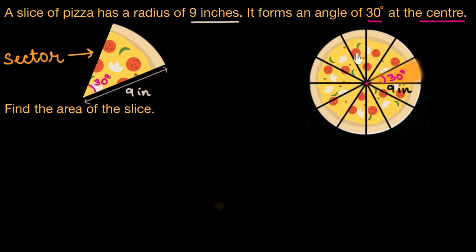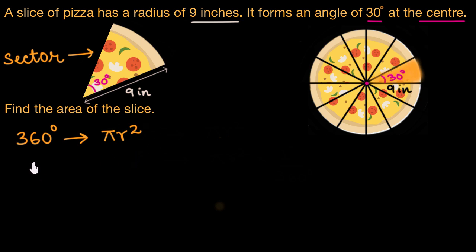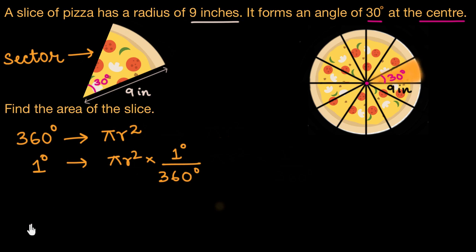A full circle makes an angle of 360 degrees at its center, and the area covered by a complete circle is πr². So in 360 degrees, a circle covers an area of πr². For one degree, the area would be πr² divided by 360. So the area covered by this sector, which makes an angle of 30 degrees, should be πr² times 30 degrees divided by 360 degrees.